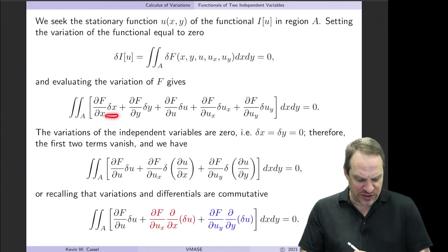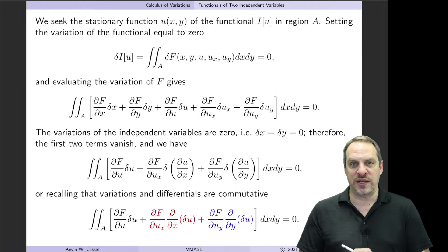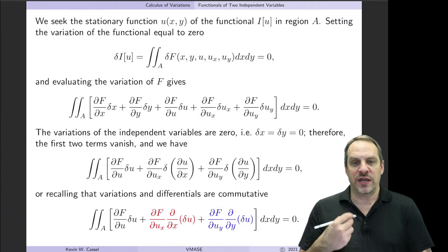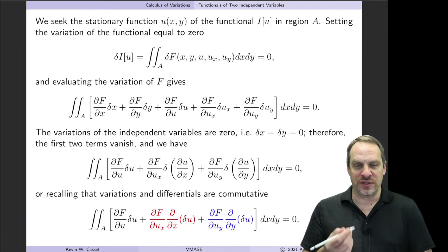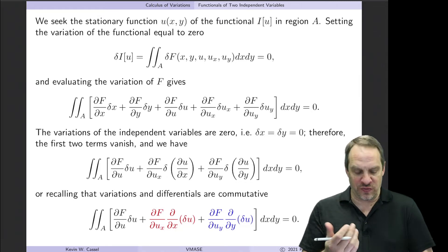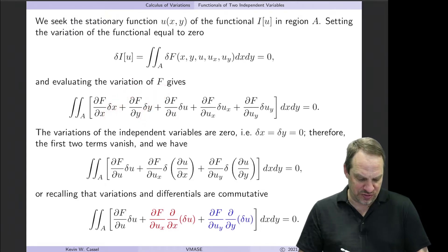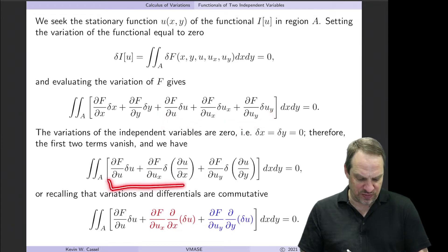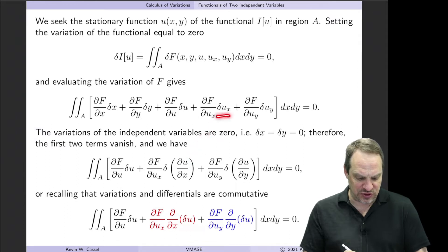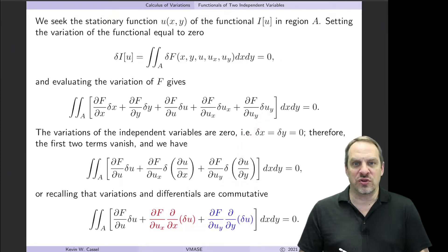Remember, however, that x and y actually do not vary — x and y are independent variables; we know what they both are before the problem began. So delta x and delta y are both zero, and the first two terms vanish, leaving us three terms. Delta u_x is the variation of partial u partial x, and delta u_y is the variation of partial u partial y.